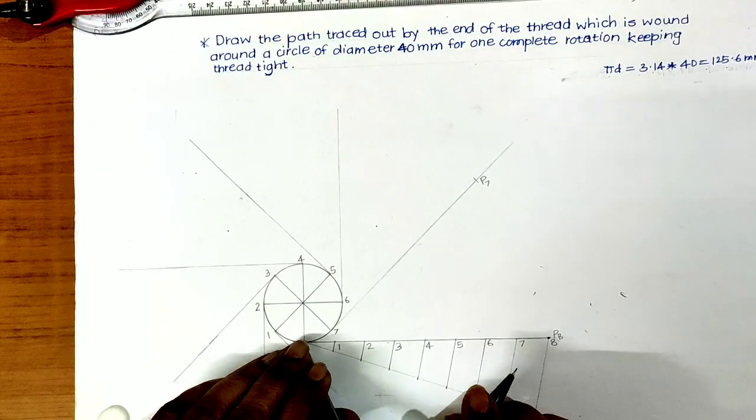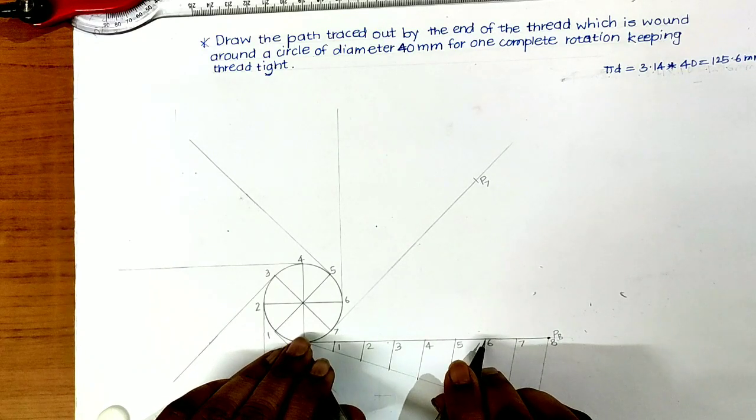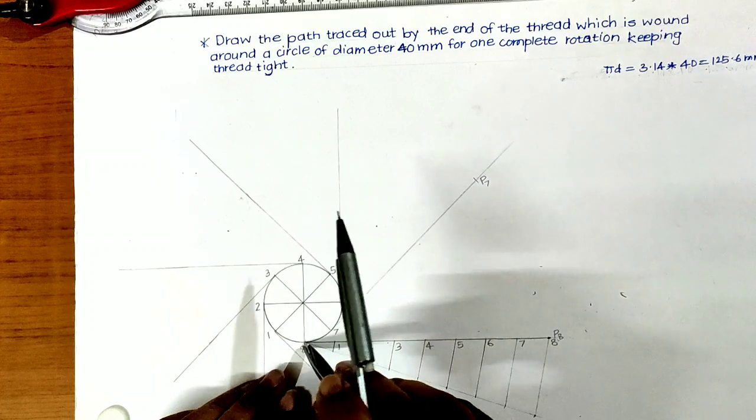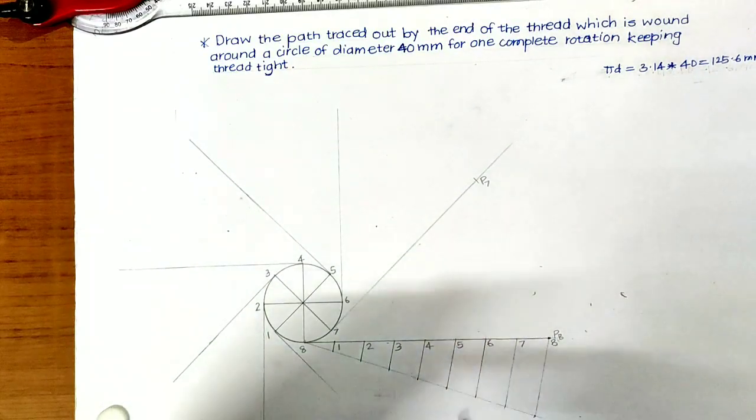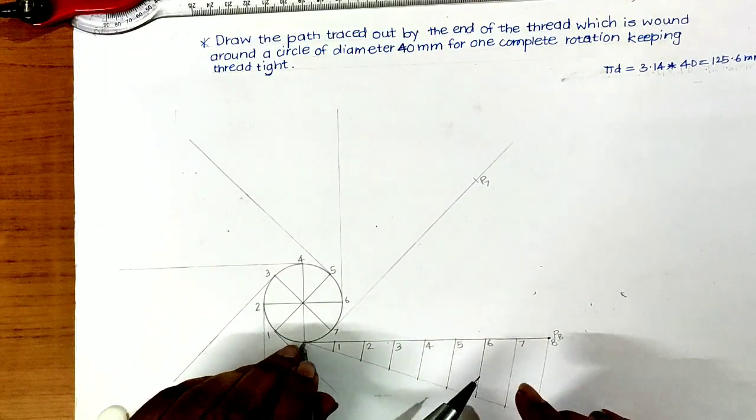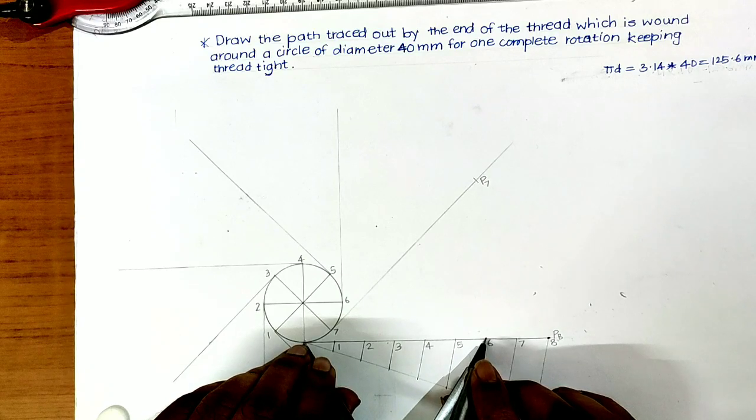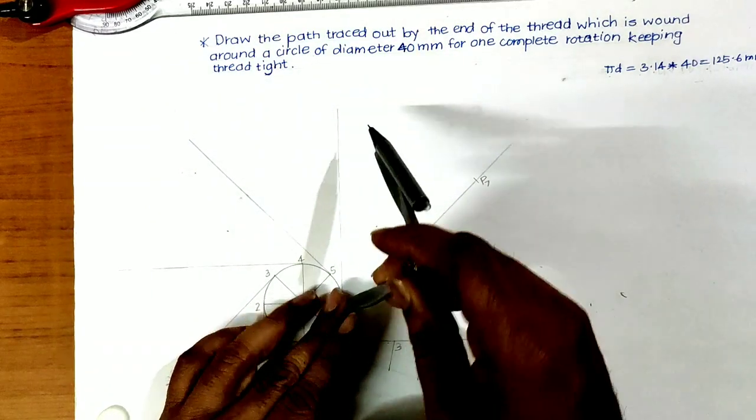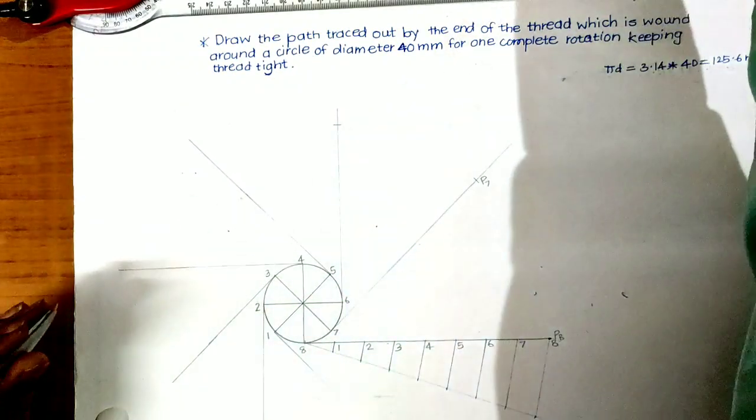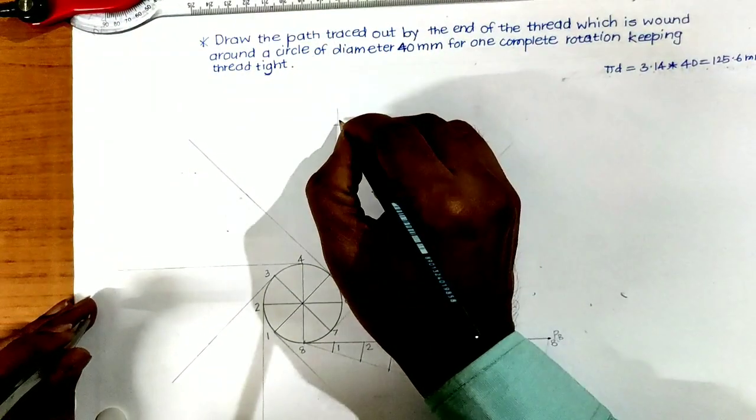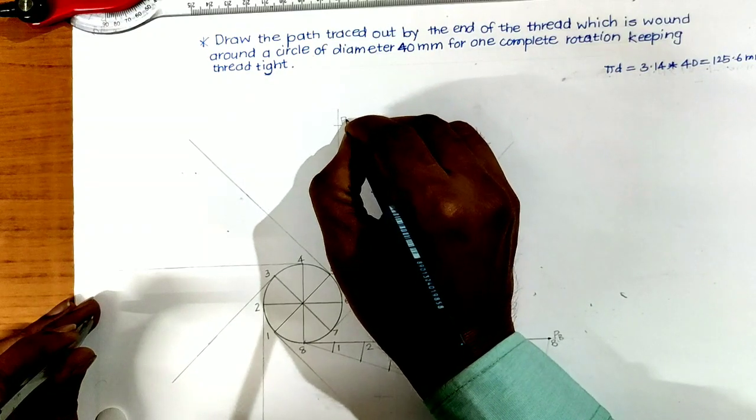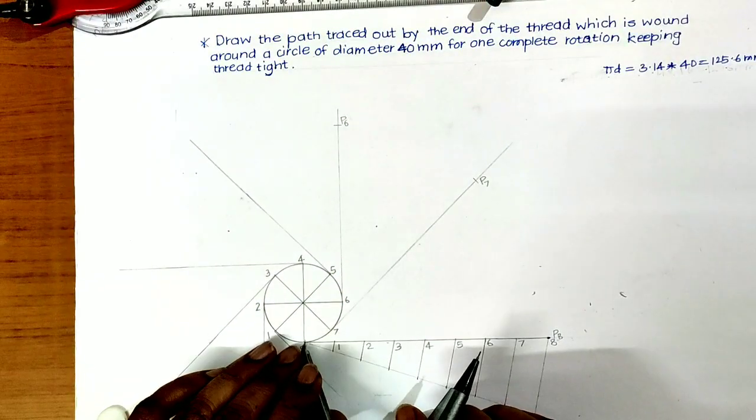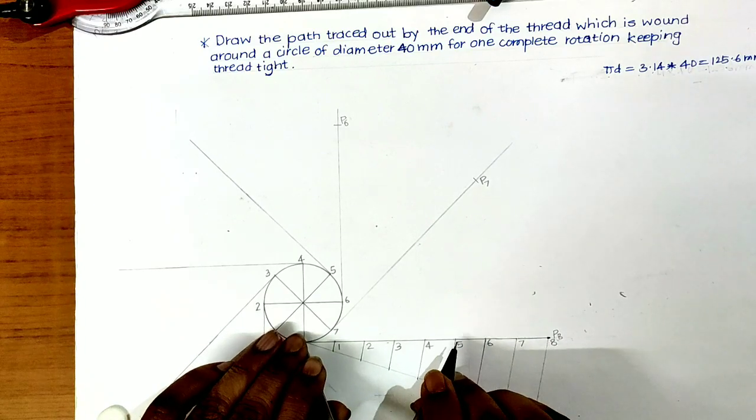Then during next 45 degree rotation, the length reduced will be up to this 6th point. Taking 6 as center, cut tangent through 6. This is the P6th point. Repeat this procedure.